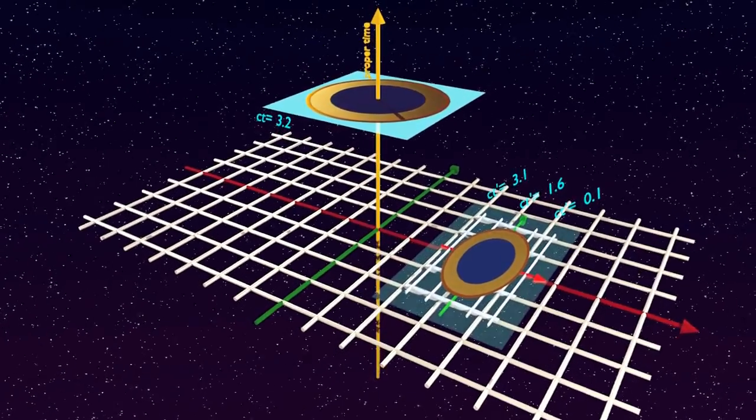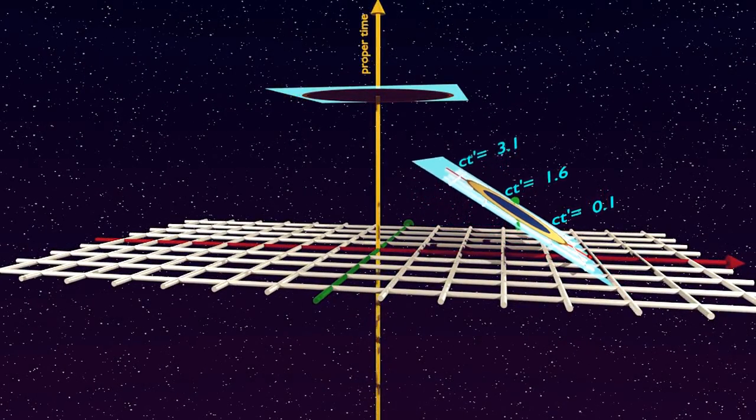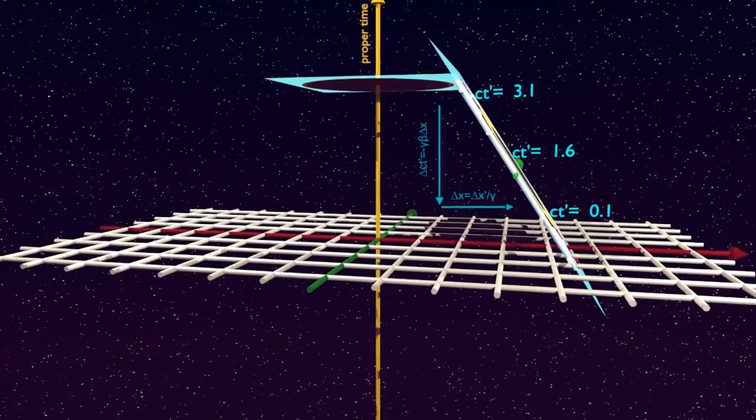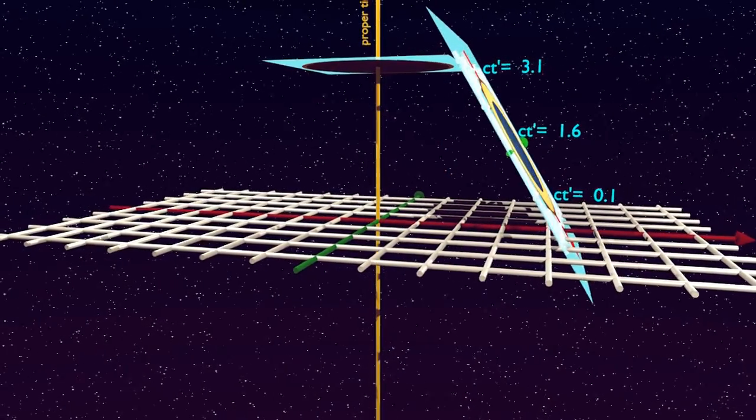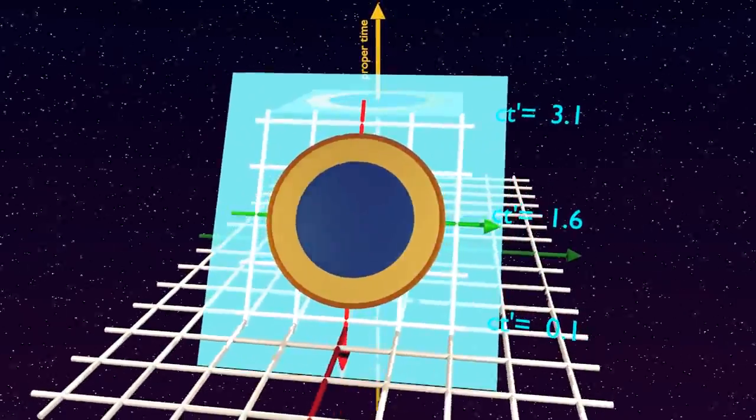But the moving lab becomes tilted along the direction of motion at an angle that exactly compensates for its length contraction. That is, in the new tilted space-time position, the moving lab length scale appears as seen at rest in the moving frame itself.